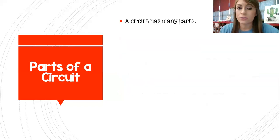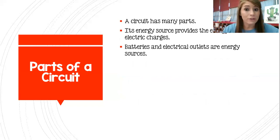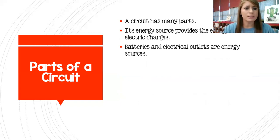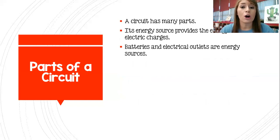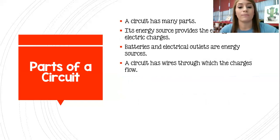There are several parts to a circuit. Energy sources provide the energy to move the electric charges. Batteries, electrical outlets where you plug things in — those are energy sources. So when you put batteries in a flashlight or in an Xbox remote, or if you plug your phone charger in, those are considered the energy source. That is where you are getting your power to allow that electricity to start going.